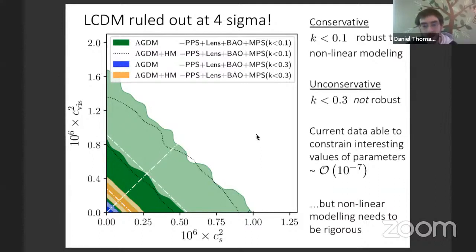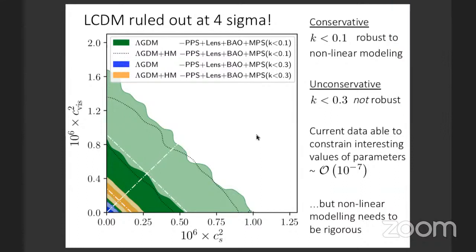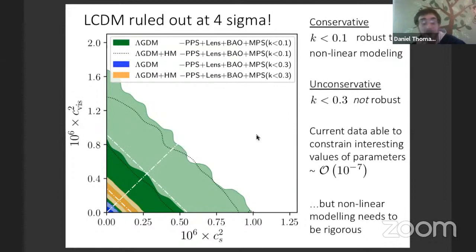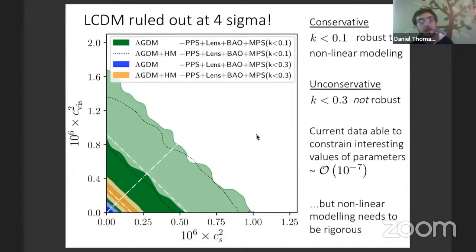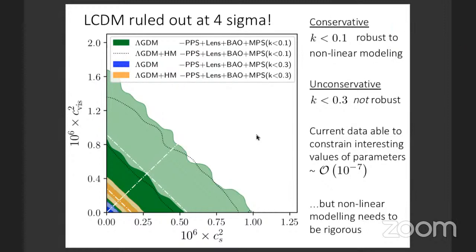Question: did you assume massless or massive neutrinos? Great question — we have an entire section in the paper where we add neutrino mass and allow it to vary, because of course it's degenerate with the dark matter properties. It's not in this plot, but we do worry about how varying neutrino mass introduces an extra degeneracy and degrades the constraints on dark matter properties.